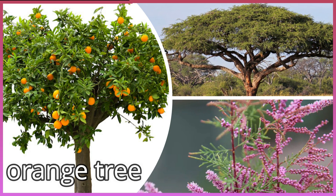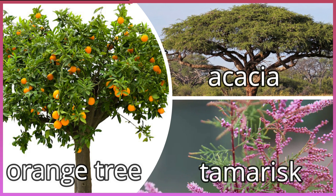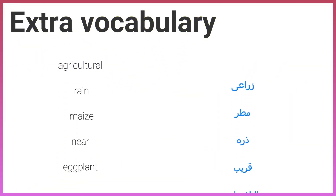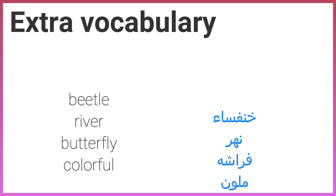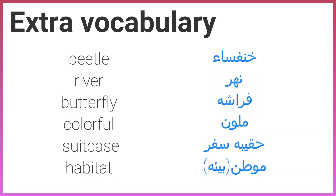Orange tree. Acacia. Tamarisk. Extra vocabulary: Agricultural. Rain. Maze. Eggplant. Lake. Beetle. River. Butterfly. Color. Colorful. Suitcase. Habitat. Cat.